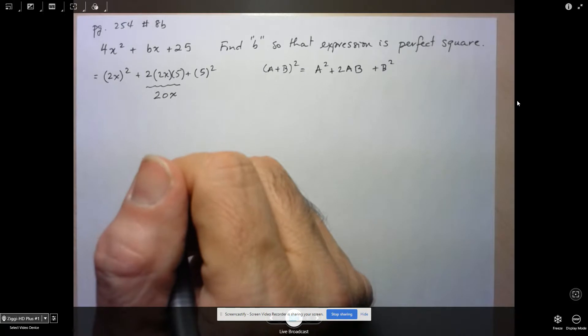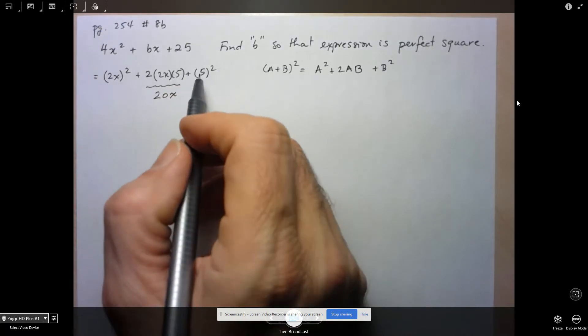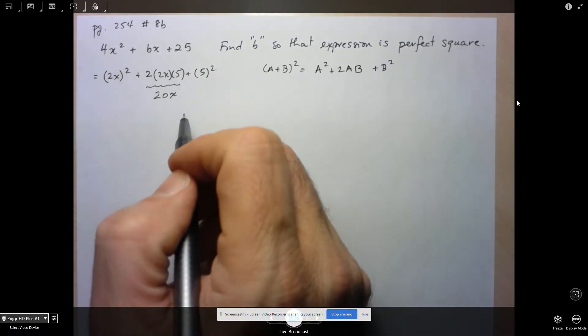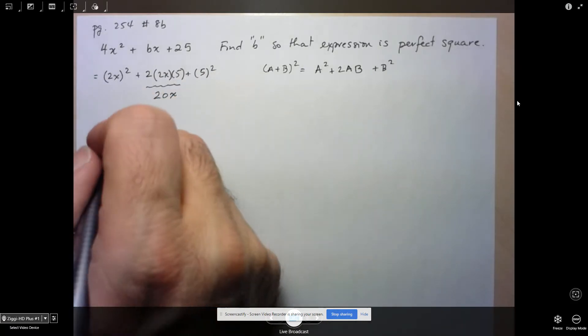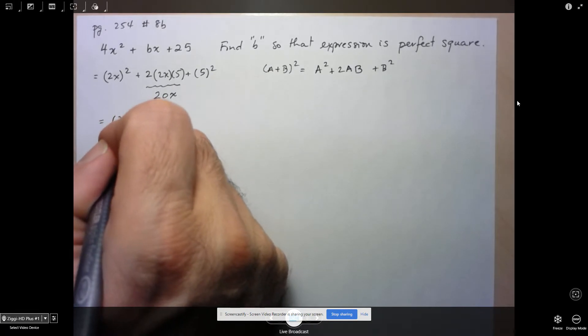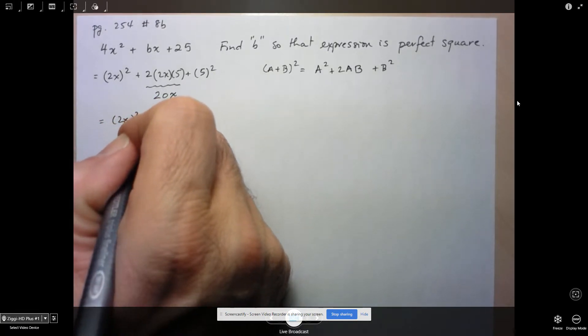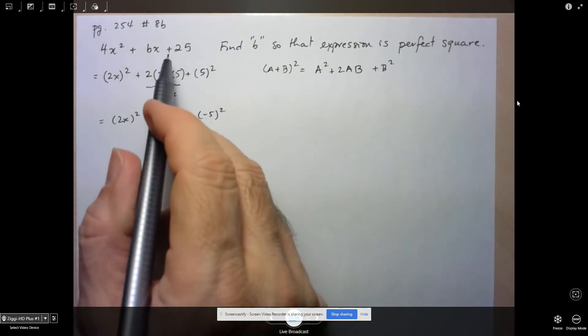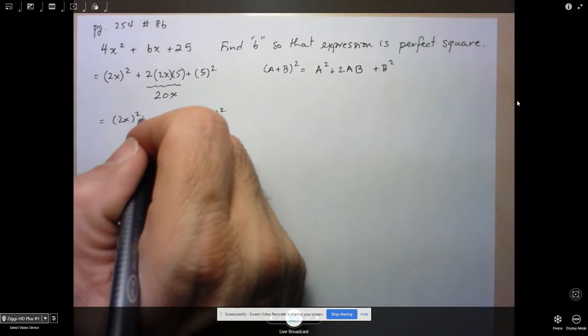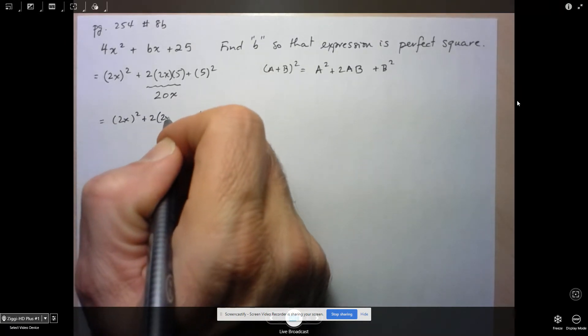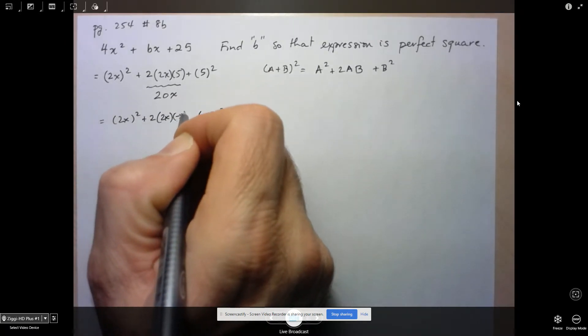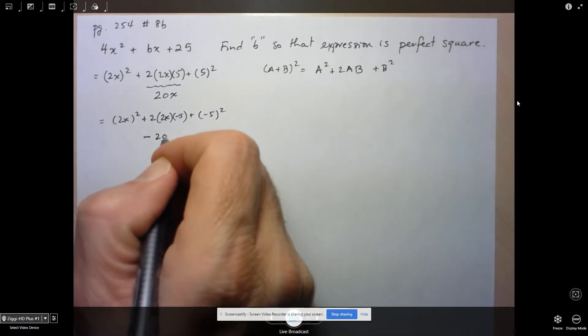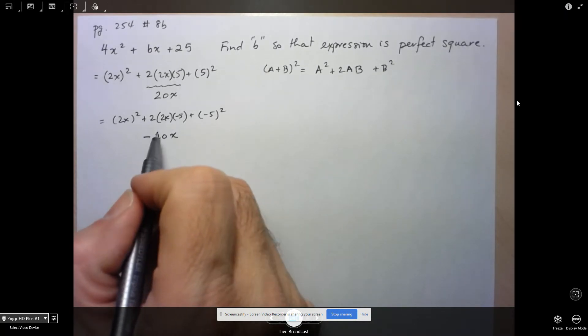Now this is where you have to be careful because there's actually a second answer. 5 squared is not the only thing that gives you positive 25. Negative 5 squared would also work. So notice, if I do the same thing, but use negative 5, that also gives me plus 25 as my perfect square. So if I add twice the product of first and last, I see that negative 20x would also work as the middle term.